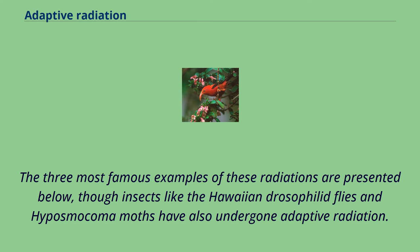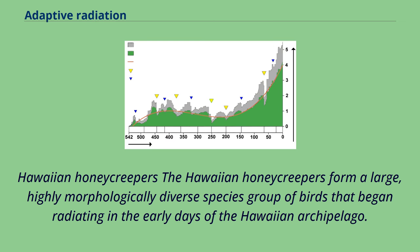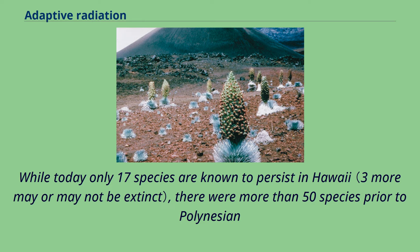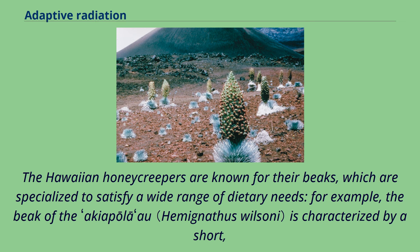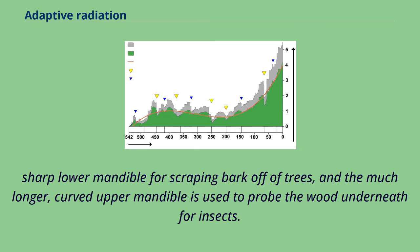The Hawaiian honeycreepers form a large, highly morphologically diverse species group of birds that began radiating in the early days of the Hawaiian archipelago. While today only 17 species are known to persist in Hawaii, there were more than 50 species prior to Polynesian colonization of the archipelago. The Hawaiian honeycreepers are known for their beaks, which are specialized to satisfy a wide range of dietary needs. For example, the beak of the Akiapolaau is characterized by a short, sharp lower mandible for scraping bark off of trees, and the much longer, curved upper mandible is used to probe the wood underneath for insects.